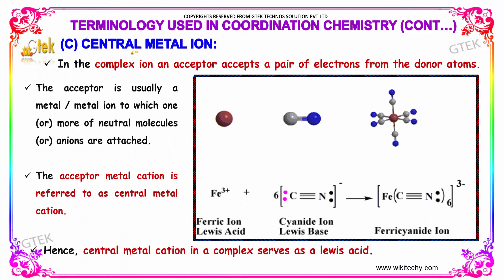The central metal ion. In the complex ion, an acceptor accepts a pair of electrons from the donor atoms. The acceptor is usually a metal ion to which one or more neutral molecules or anions are attached. The acceptor is referred to as the central metal cation. Hence, the central metal cation in a complex serves as a Lewis acid.